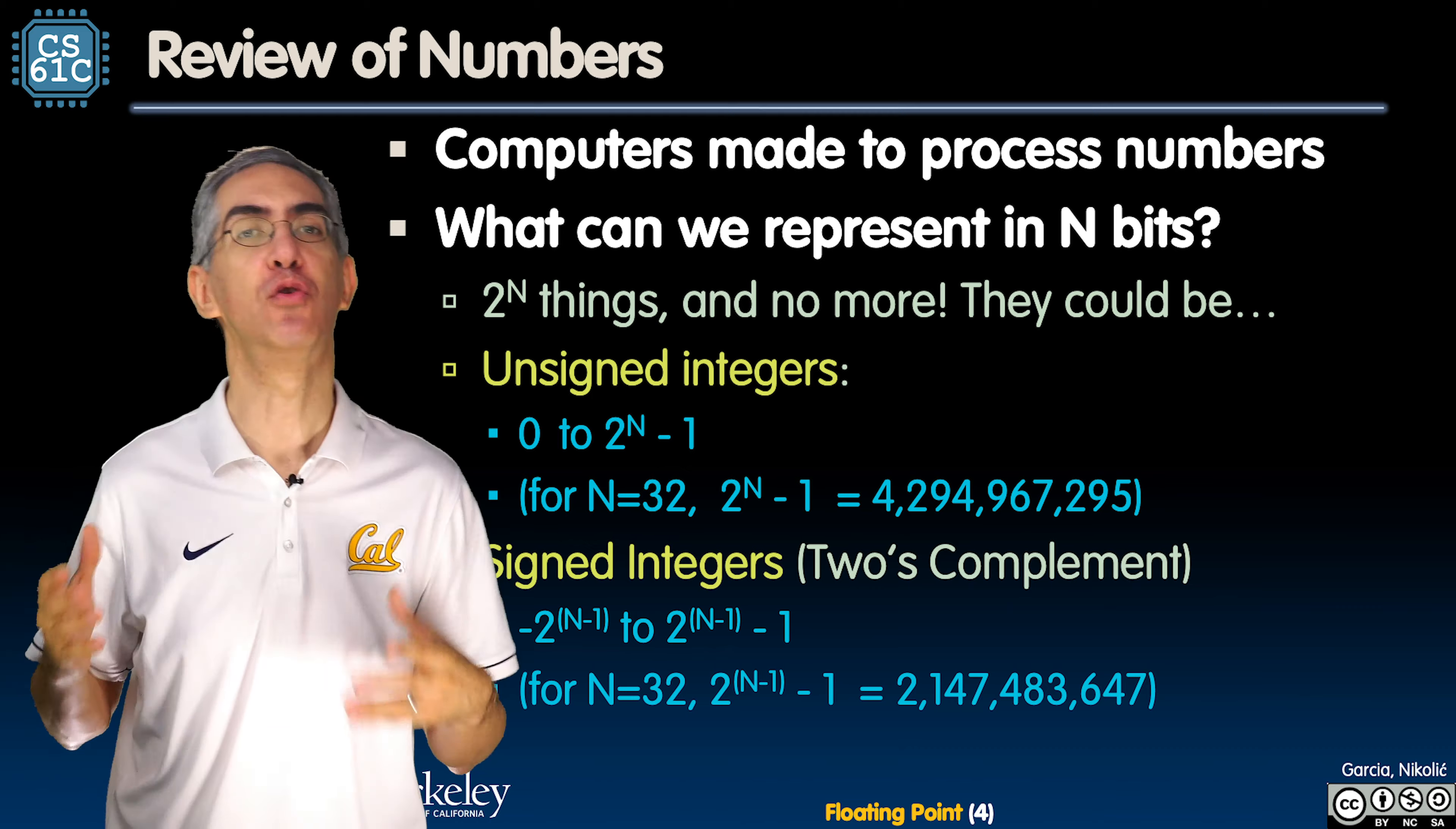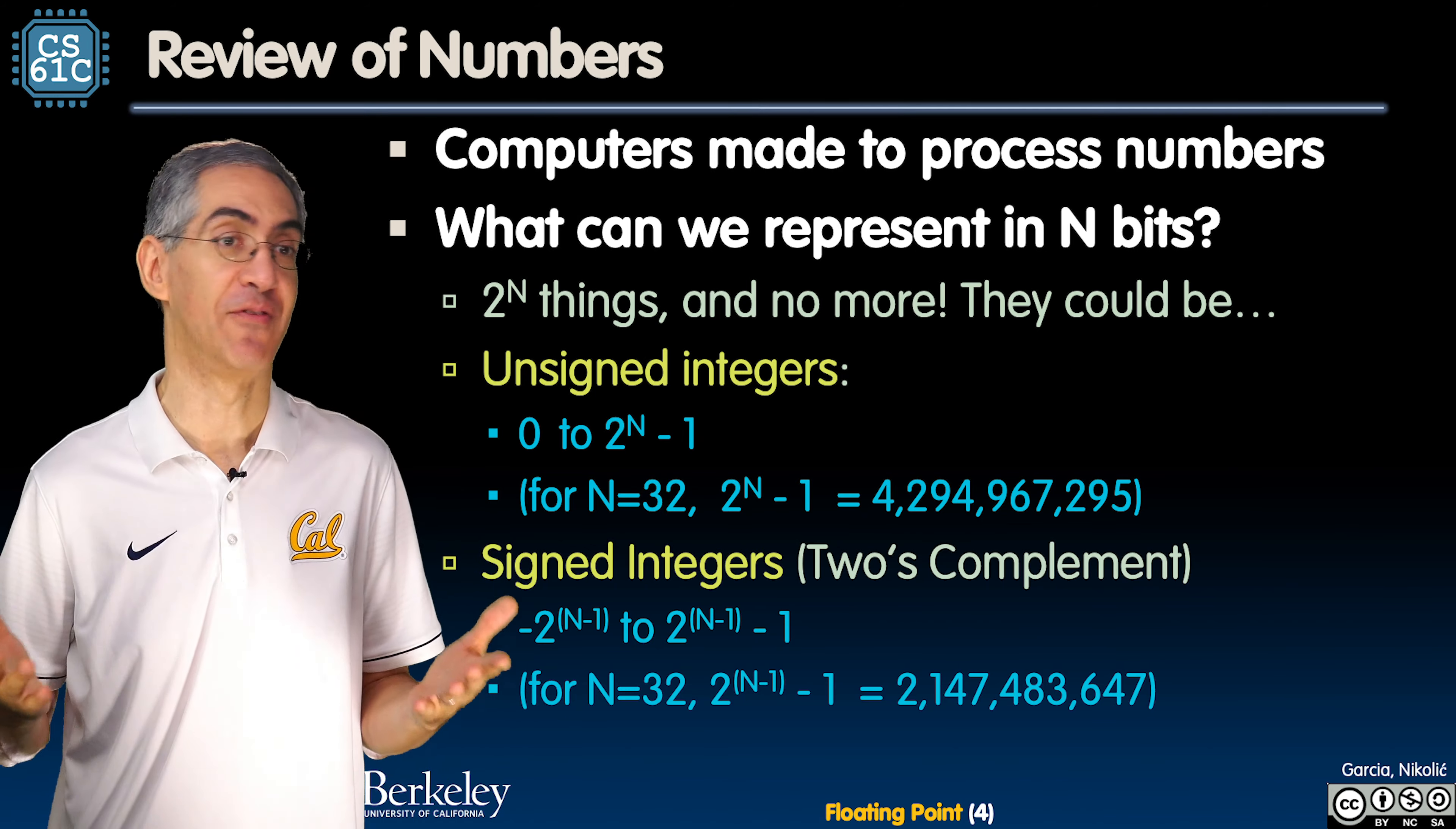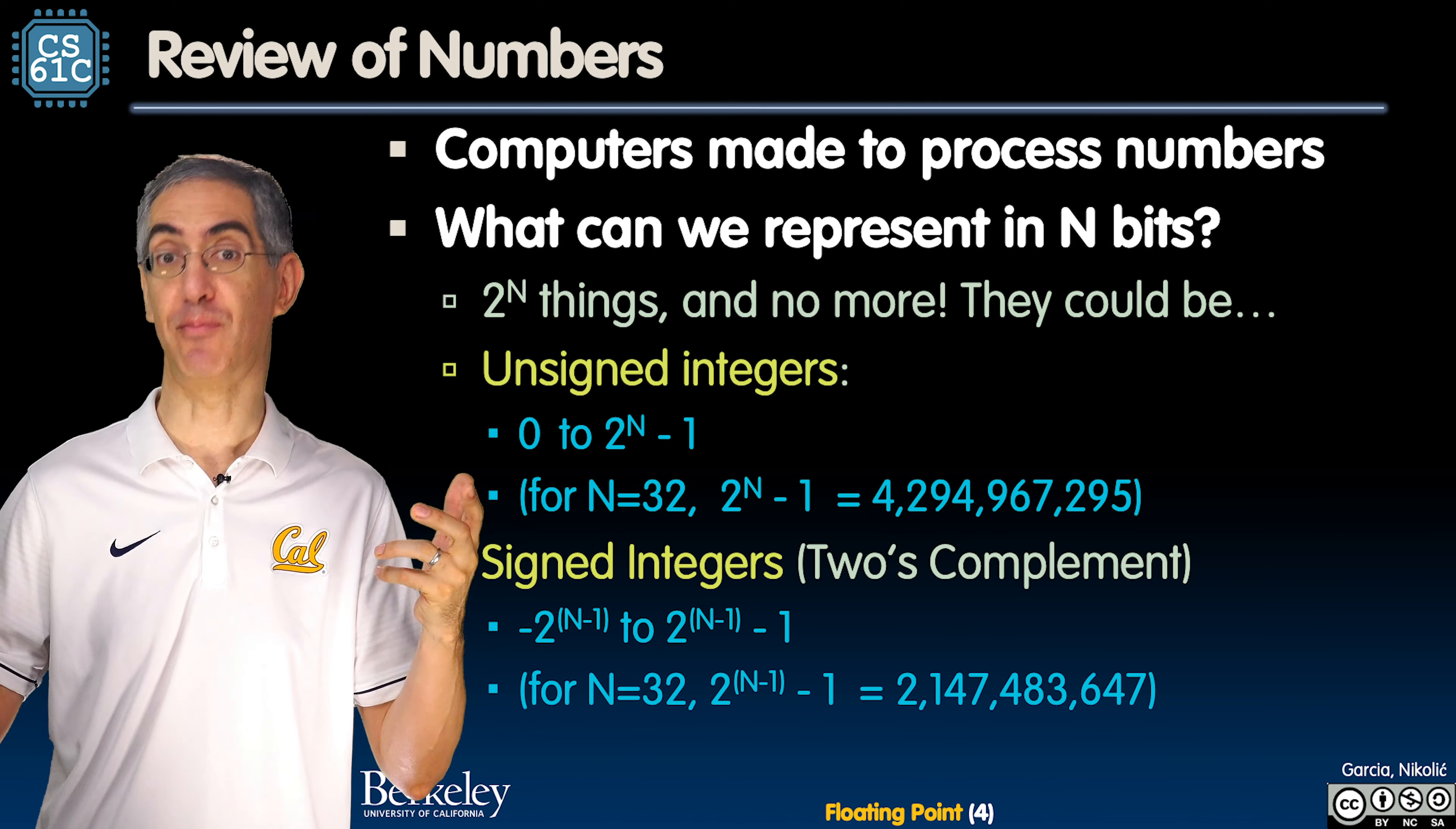So in review, what can you do with n bits? Computers are great at processing numbers. If you had n bits, let's just choose the most common ones. If you had unsigned, if n is 32, you can go from zero to 4.2-ish billion. That's kind of neat. All the integers in that space. That's a lot of numbers. We're feeling pretty good.